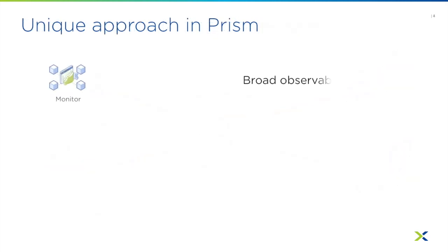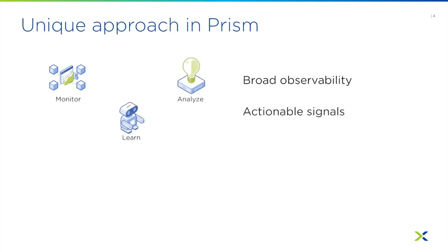In the last four years, we have been developing a very unique approach to solve these two problems. We started to use machine learning capabilities to generate actionable signals about capacity and anomalies. We then provide a low-code automation platform we call cross-play to allow you to automate your operation tasks with ease and confidence.